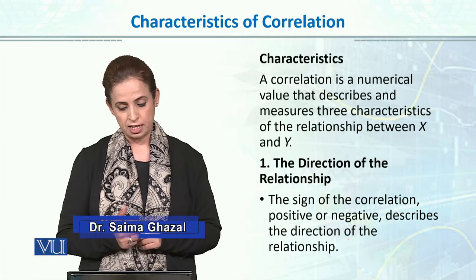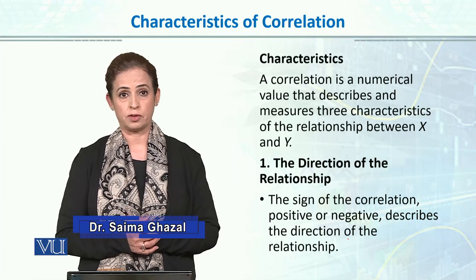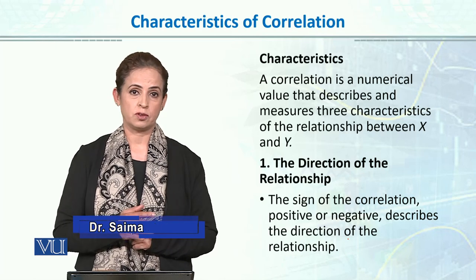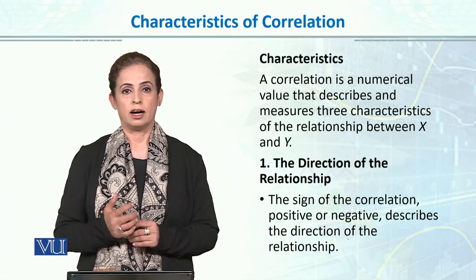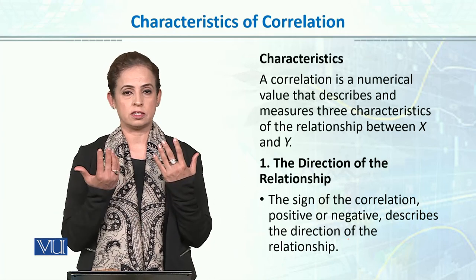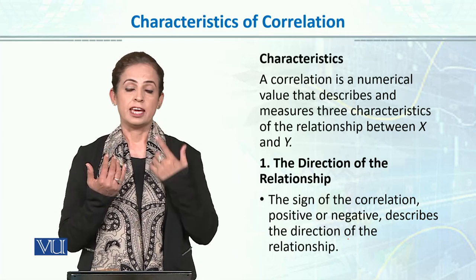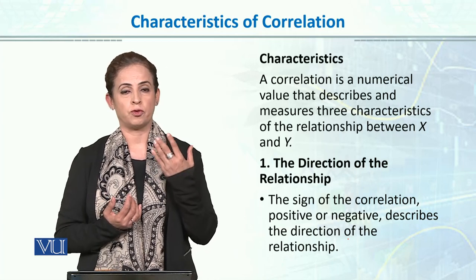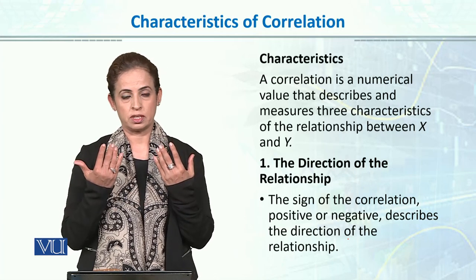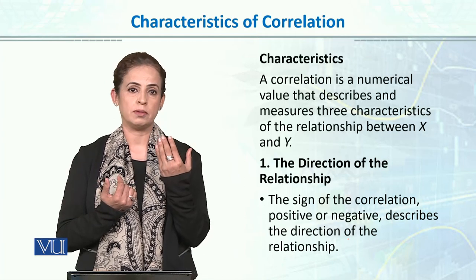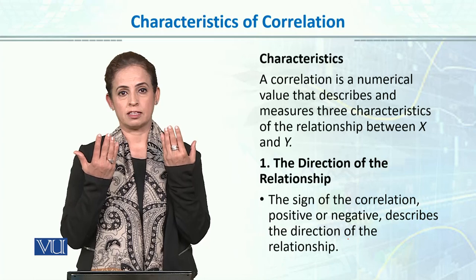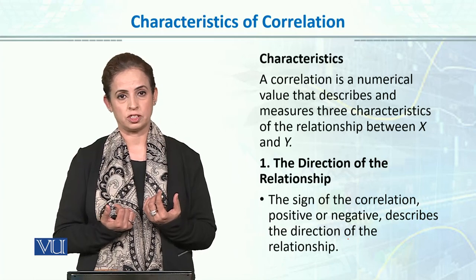The first characteristic is the direction of the relationship. Correlation could be positive or negative. A positive correlation means if one variable is increasing, the other is increasing as well. For example, if I am studying for more hours, my GPA will increase. One is increasing, the other is increasing — it's a positive correlation.